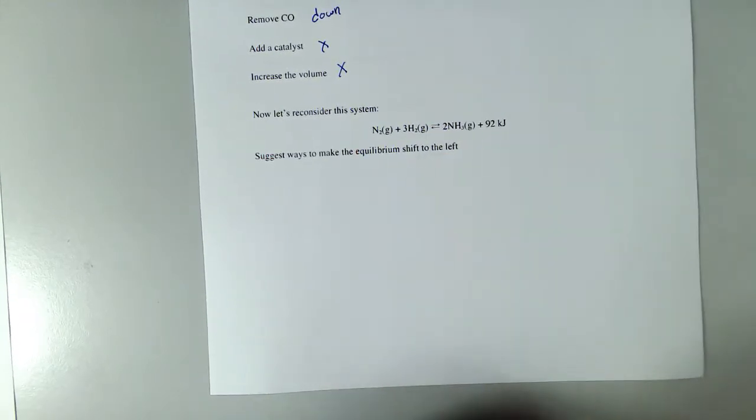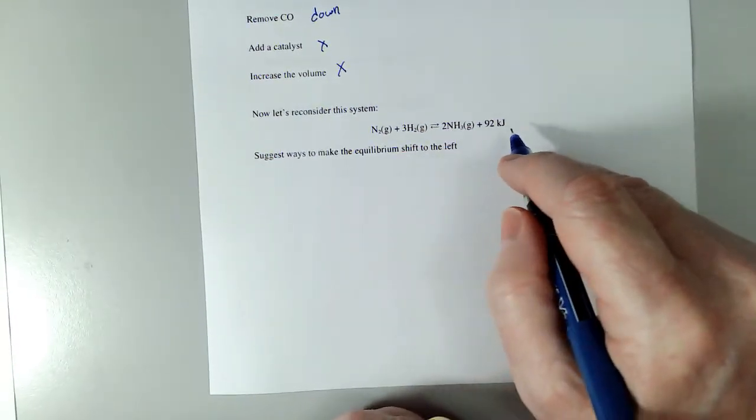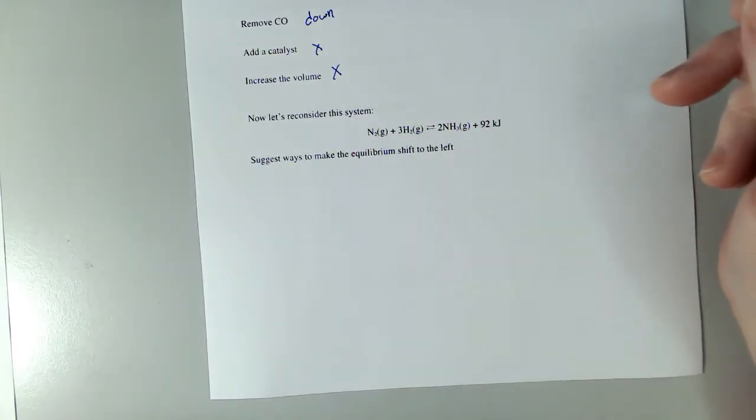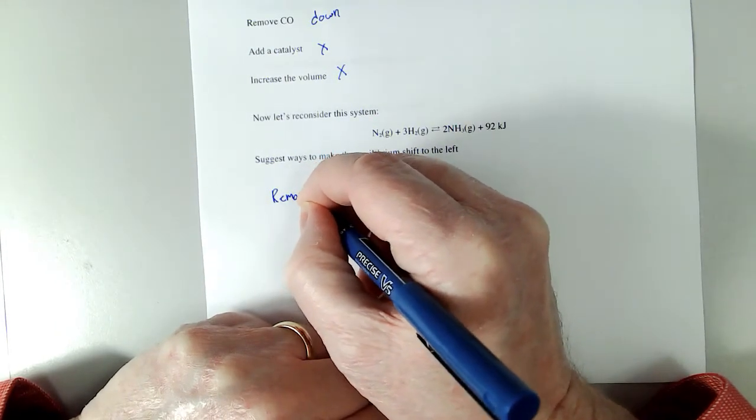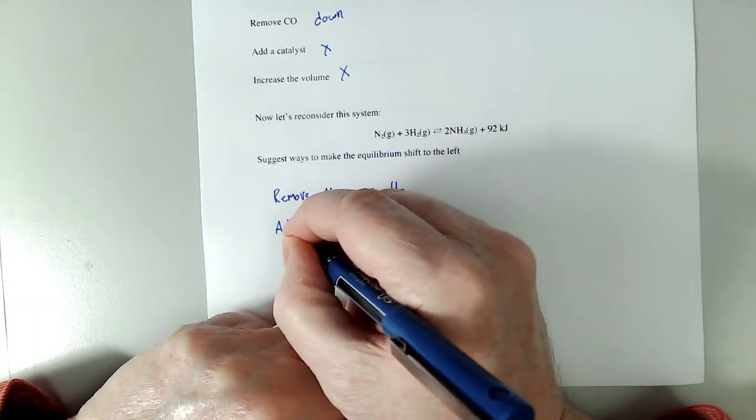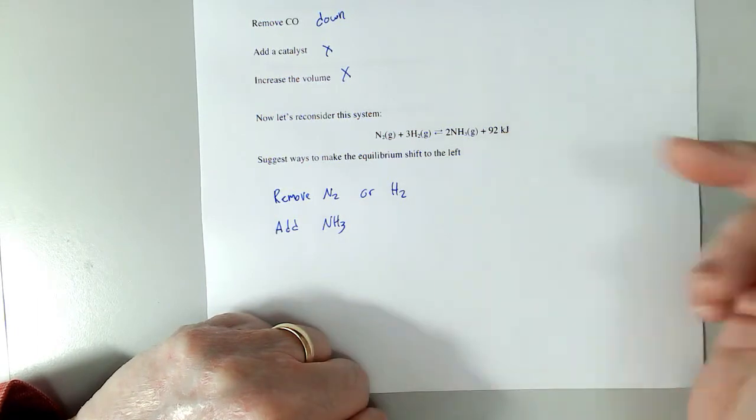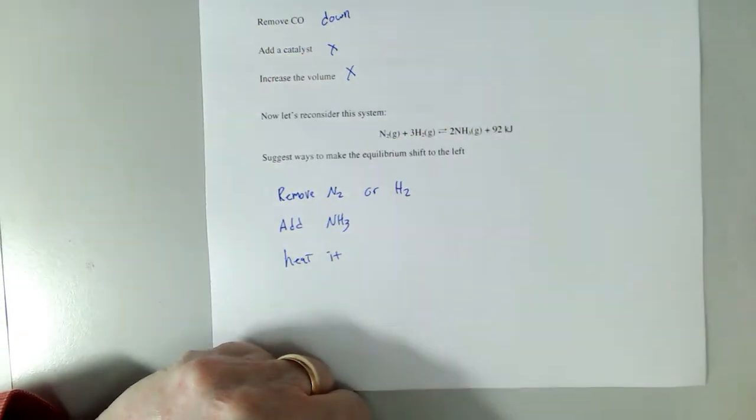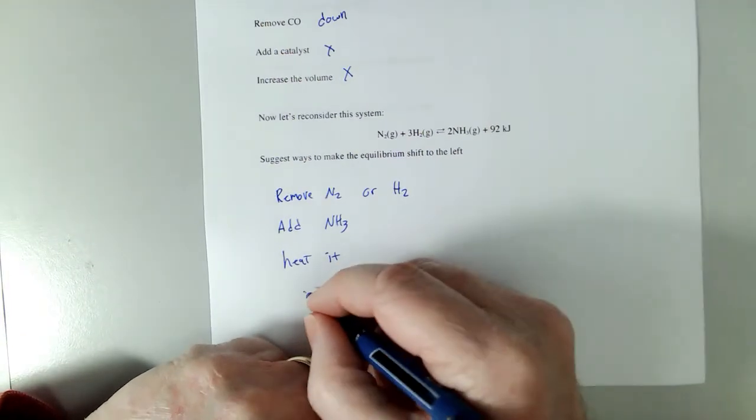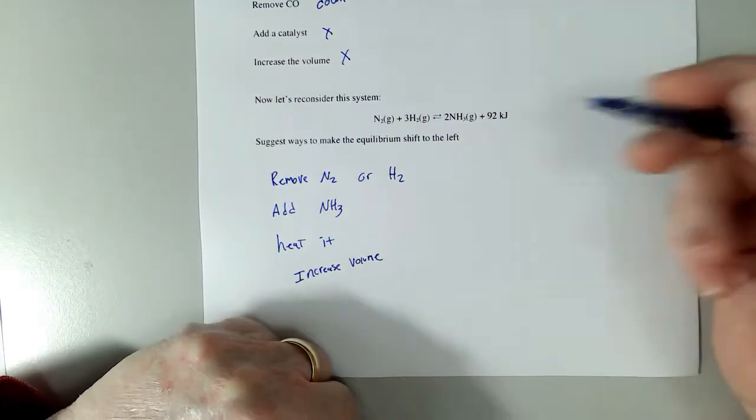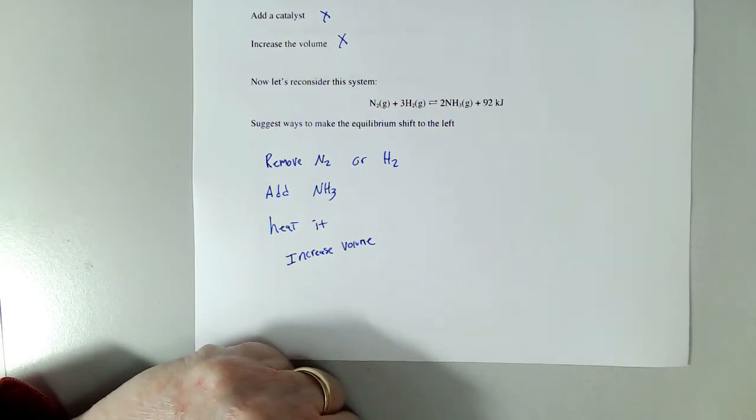So here's the real question now. This is more what you'd have to think about. N2 plus 3H2 to NH3 is exothermic. Suggest ways to shift the equilibrium towards the left. Well, I can remove N2 or H2, that'll shift it to the left. I can add ammonia, that'll shift it to the left. I can heat it, that'll shift it to the left. Do a volume change. Let me increase volume. That will shift it to the left.